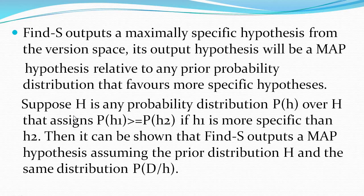Throughout the hypothesis space H, if we consider two hypotheses H1 and H2, and if P(H1) is greater than or equal to P(H2), then H1 is the more specific hypothesis found through the Find-S algorithm, and that is what we consider as the maximum a posteriori hypothesis. When H1 is consistent over D, we assign P(D|H) equal to 1.